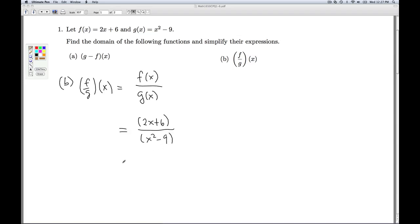Since I do have a fraction, I want to see if I can reduce it at all, which means I need to look for common factors. So in the numerator, I can factor a 2 out, and I'll be left with an x plus 3. And in the denominator, I can factor that as the difference of two squares, x minus 3, x plus 3. And lo and behold, I have a common factor of x plus 3 that I can cancel from the numerator and denominator. And so my final simplified formula is 2 divided by x minus 3.